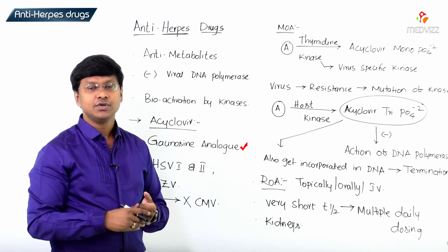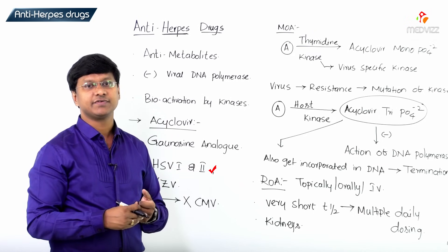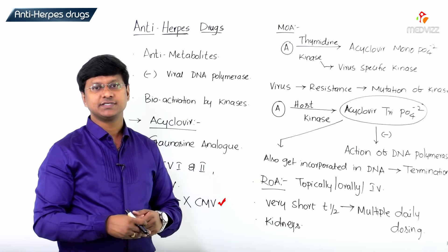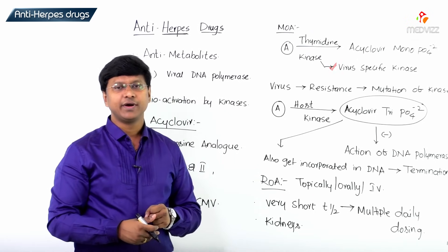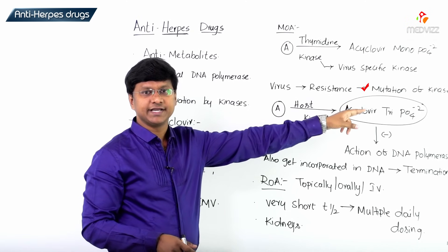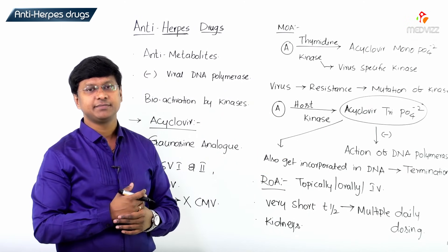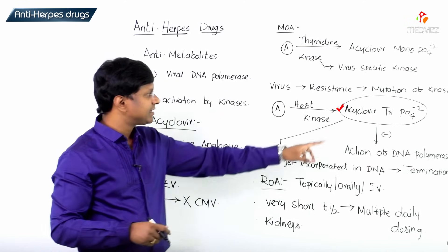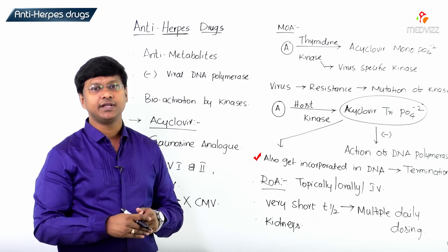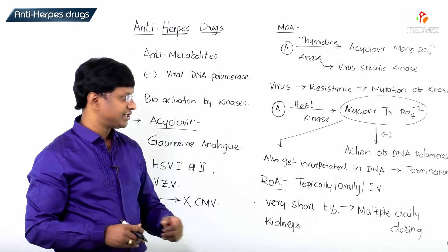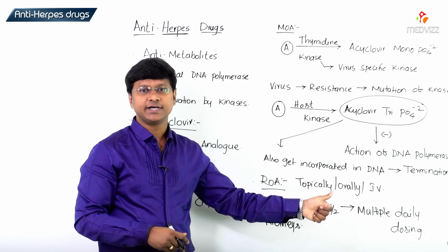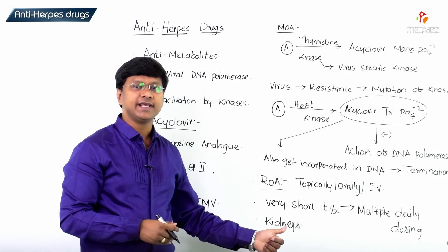Acyclovir is a guanosine analogue active against HSV1, HSV2, and varicella zoster virus, but not CMV. It is activated by the virus-specific thymidine kinase to form acyclovir monophosphate, though the virus can develop resistance via kinase mutation, after which host kinases form acyclovir triphosphate. This product competitively inhibits viral DNA polymerase and causes chain termination. Acyclovir is given topically, orally, or intravenously, has a short half-life requiring multiple daily dosing, and is primarily excreted by the kidneys.